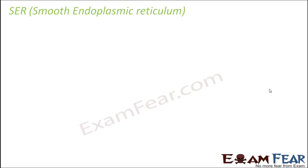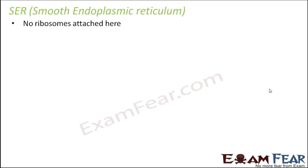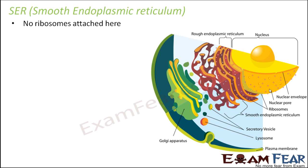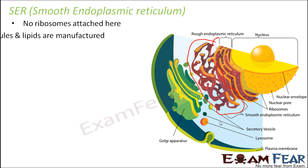Now, talking about smooth endoplasmic reticulum — there are no ribosomes attached here, and therefore the surface is quite smooth. In this portion, you do not see those dot structures. They have a smooth surface.